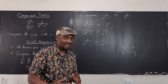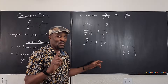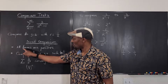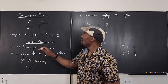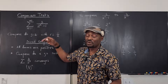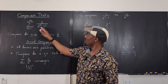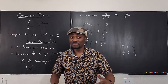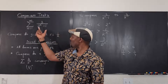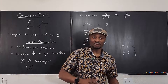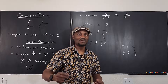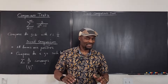When direct comparison fails, don't throw everything away — the limit comparison test will save you. However, for the limit comparison test you need one more condition beyond positive terms: the terms of the series must be decreasing. If you write the expression as a function and take the derivative, the derivative must always be negative. That's what you want to look for — or find another way to show the function is decreasing.